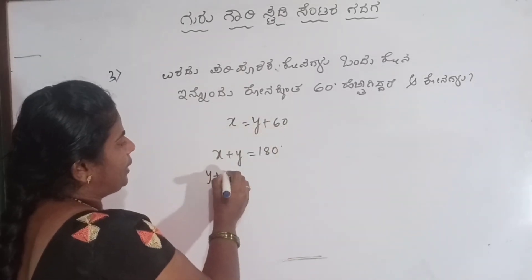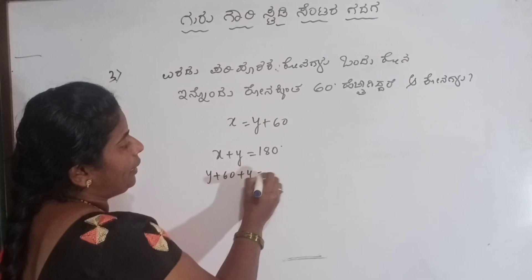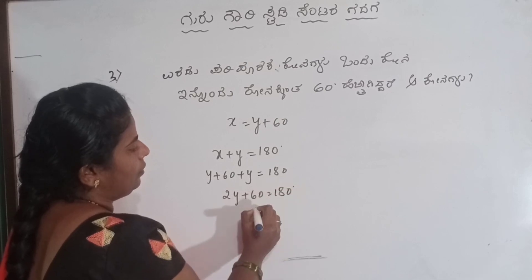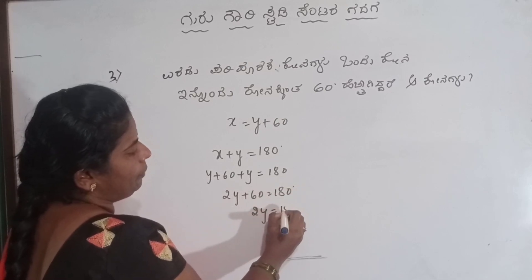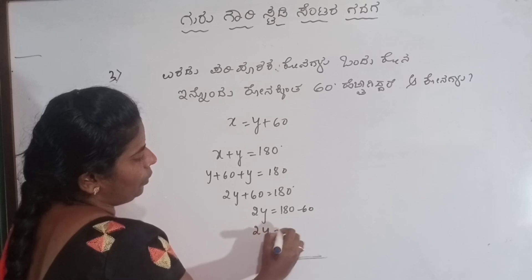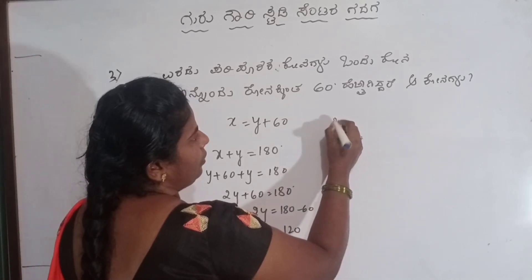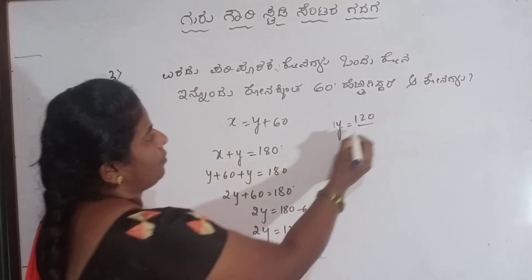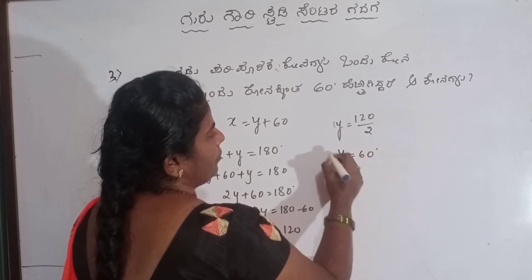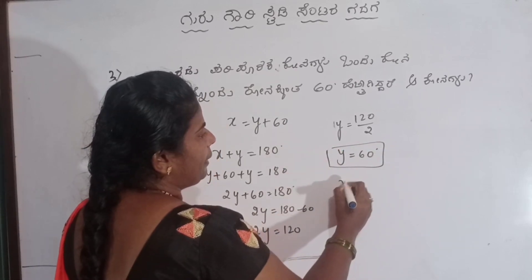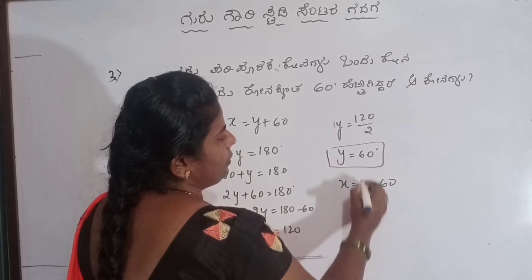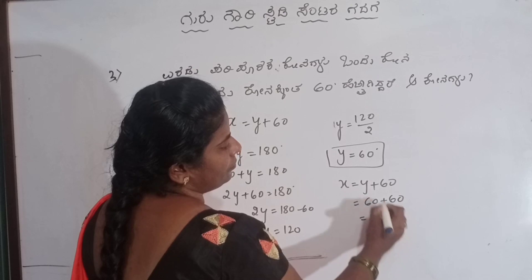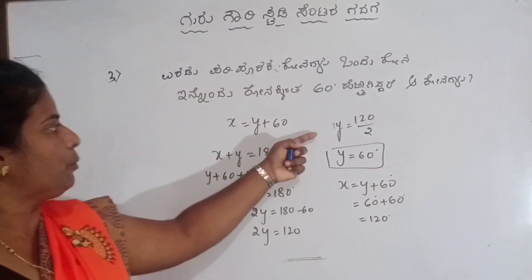x is the line y plus 60. Same: plus y equal to 180 degree. But here 2y plus 60 degree equal to 180 degree. 2y equal to 180 minus 60, it means 2y equal to 120. y equal to 120 divided by 2, so y equal to 60 degree. Next: x equal to y plus 60, it means 60 plus 60 equals 120 degree.